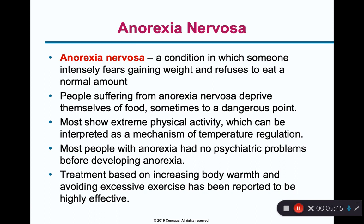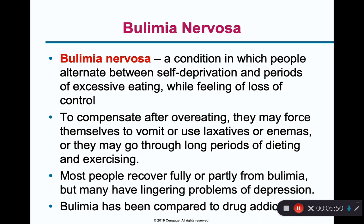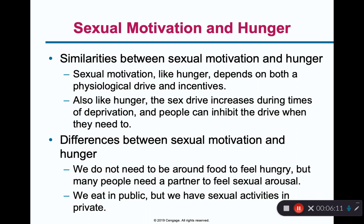The book also talks about eating disorders such as anorexia — being afraid to gain weight and not eating enough — and bulimia, which involves cycling between self-deprivation and excessive eating, a loss of control, and compensatory behaviors like forced vomiting. A lot of this is based on body image in the social context as well as genetics and DNA.